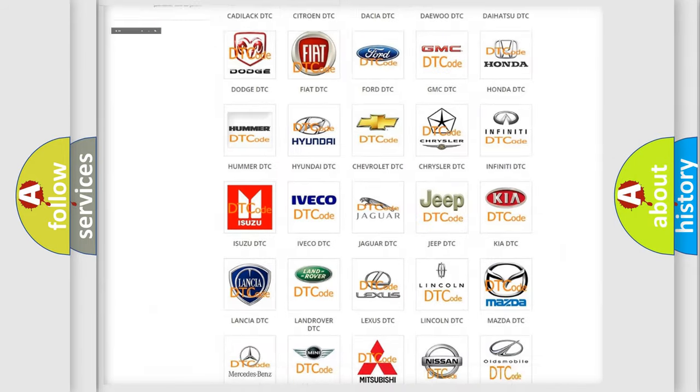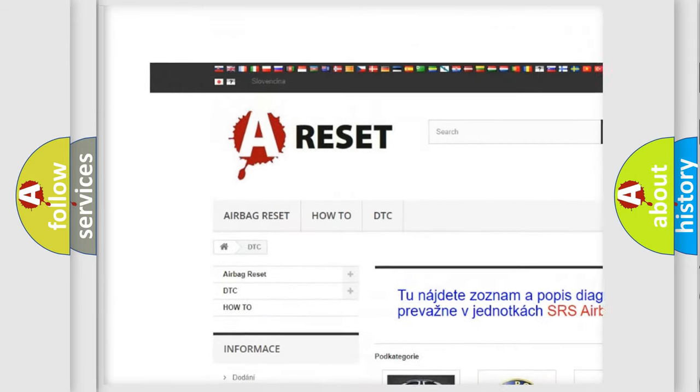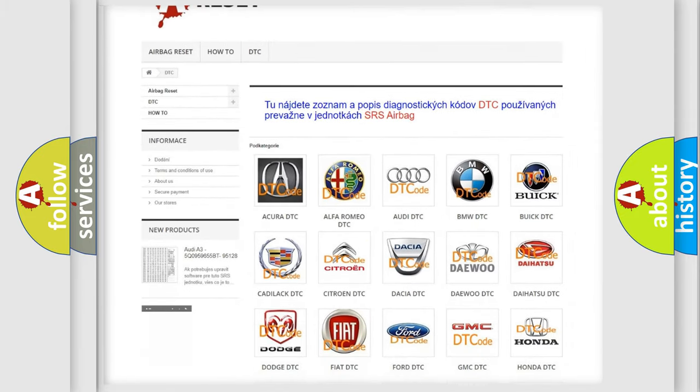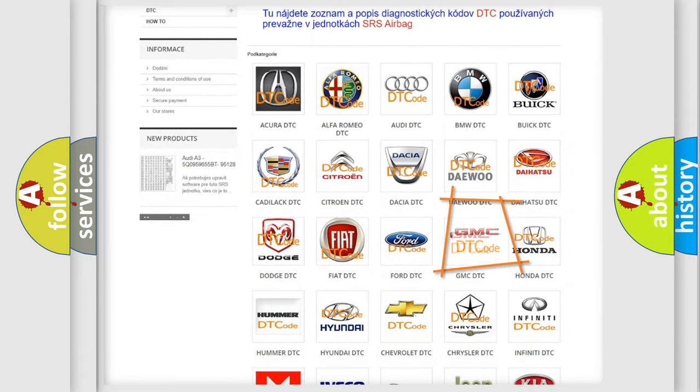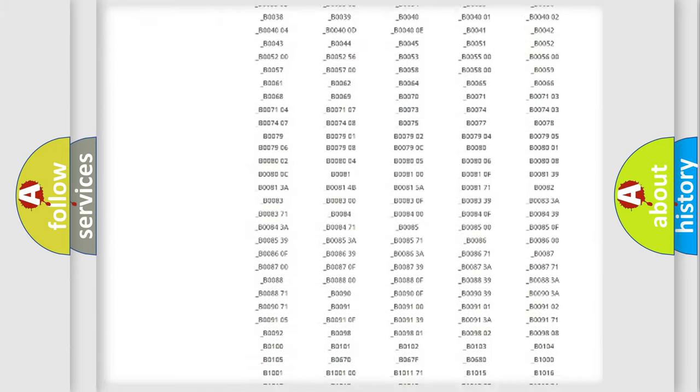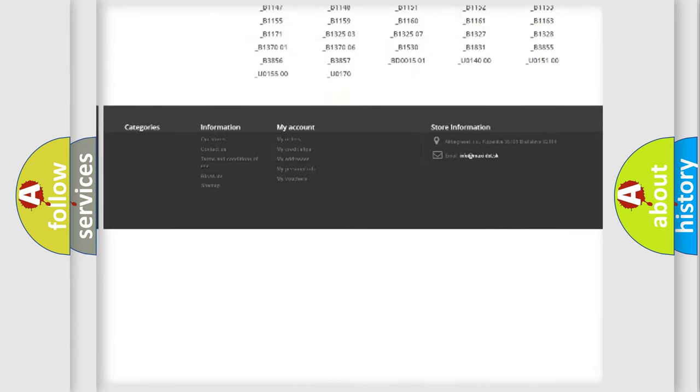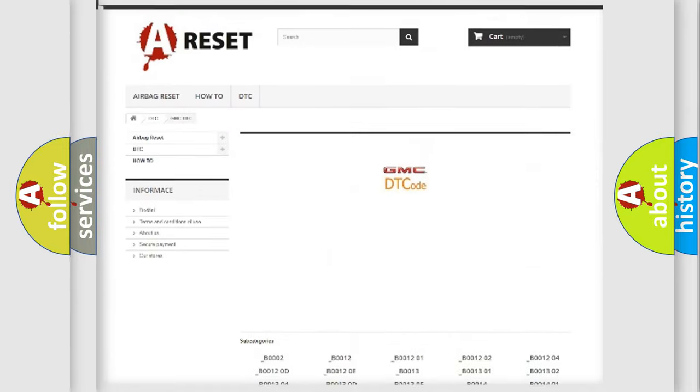Our website airbagreset.sk produces useful videos for you. You do not have to go through the OBD2 protocol anymore to know how to troubleshoot any car breakdown. You will find all the diagnostic codes that can be diagnosed in GMC vehicles.